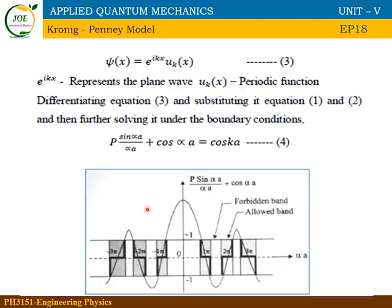Solving these two differential equations through mathematical manipulation gives the final solution: P·(sin αa / αa) + cos αa = cos ka. This is the Kronig-Penney result. Plotting P·sin(αa)/αa + cos(αa) against αa gives the energy band diagram, showing allowed and forbidden energy bands.